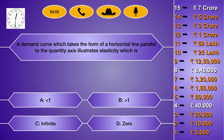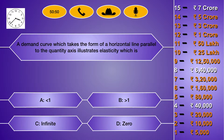A demand curve which takes the form of a horizontal line parallel to the quantity axis illustrates elasticity which is: option A less than 1, option B greater than 1, option C infinite, option D zero. The right answer is option C: infinite.